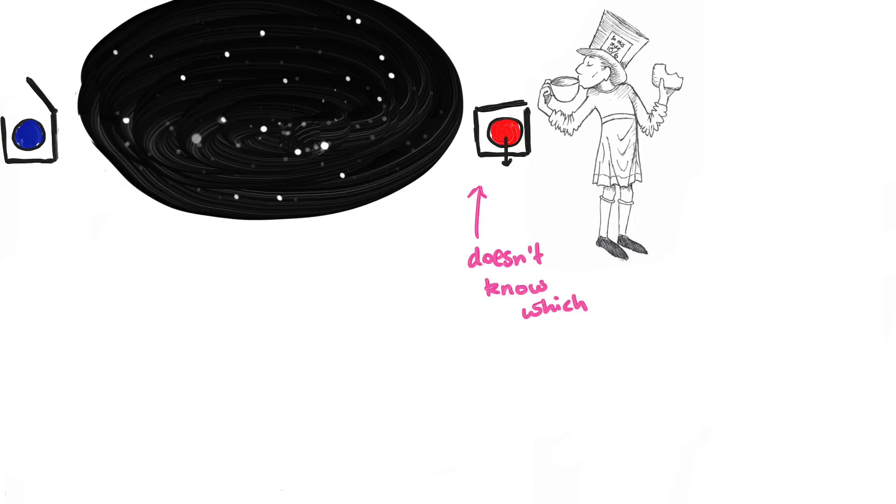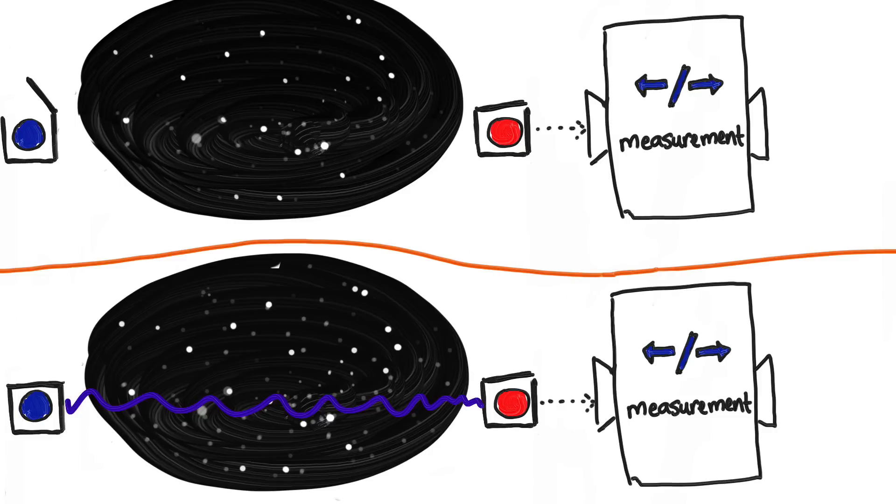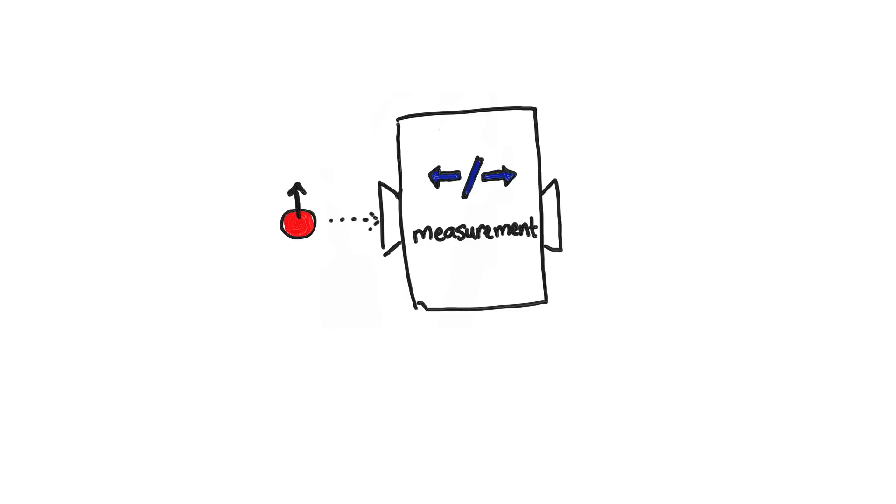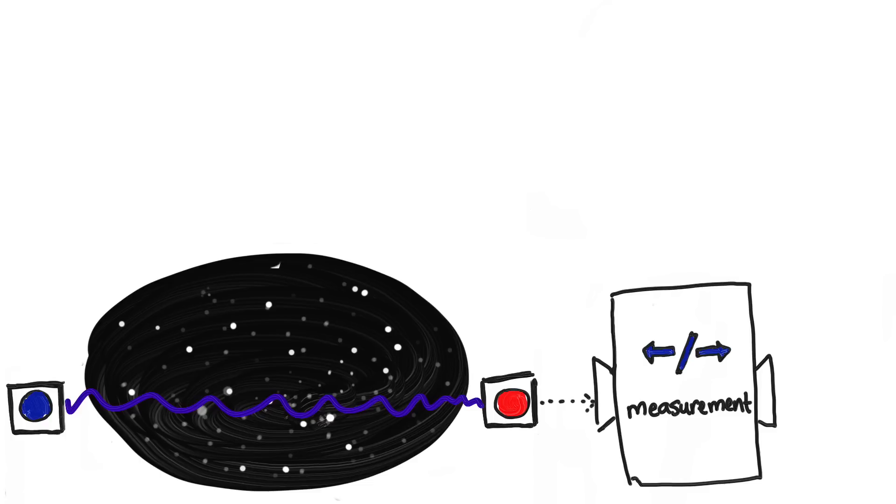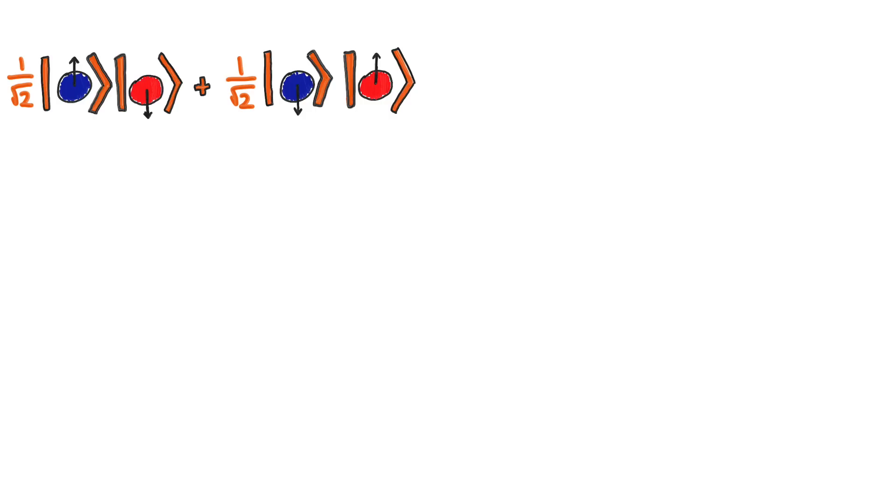Now let's say Bob does a measurement of the left or rightness of his particle. We know that if we did this to a particle that's up, it will go either left or right randomly. And same thing for a down particle. So even though we don't know which it is, up or down, we know it will go randomly left or right, and this is the no interference result that we kind of talked about in some previous videos. This is kind of what we expected.